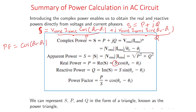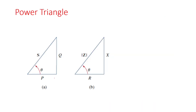Power factor is cos(θv − θi). If any two of the four parameters S, P, Q, and power factor angle are given, we can calculate the others. The complex power S = P + jQ can be represented in a power triangle, where P is on the real axis, Q on the imaginary axis, θ is the power factor angle, and S = √(P² + Q²) by the Pythagorean theorem. This is entirely similar to the impedance triangle, where R is resistance, X is reactance, Z is impedance, and |Z| = √(R² + X²).